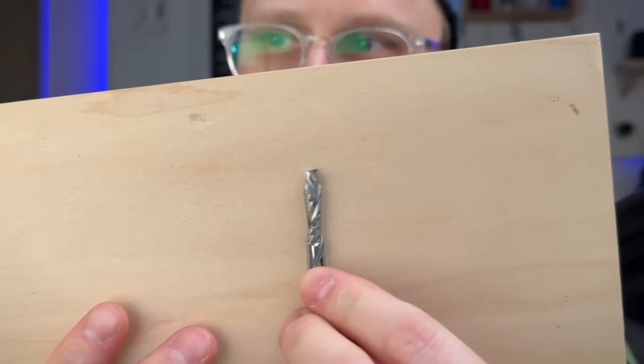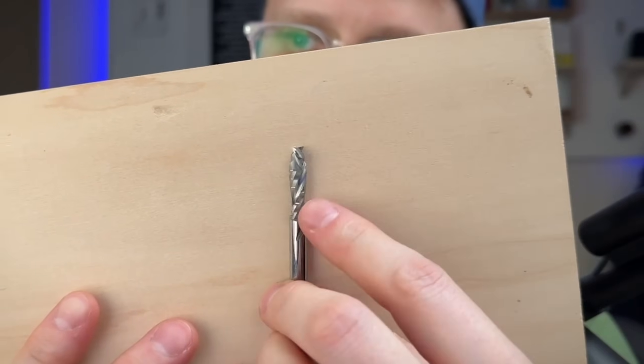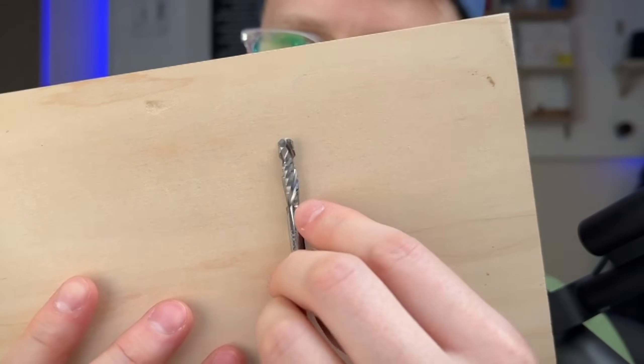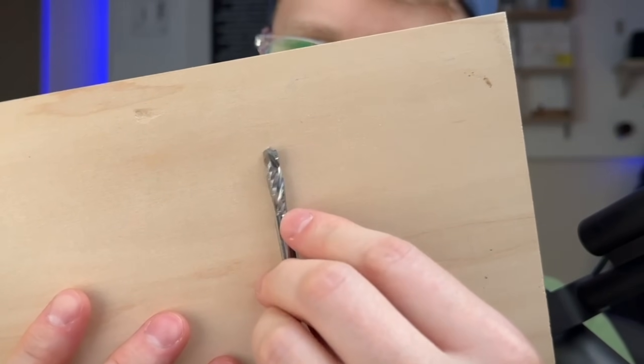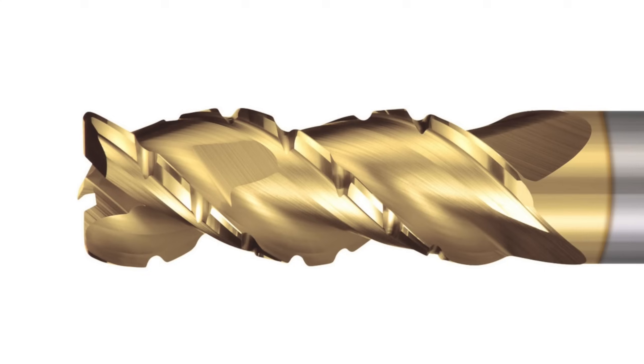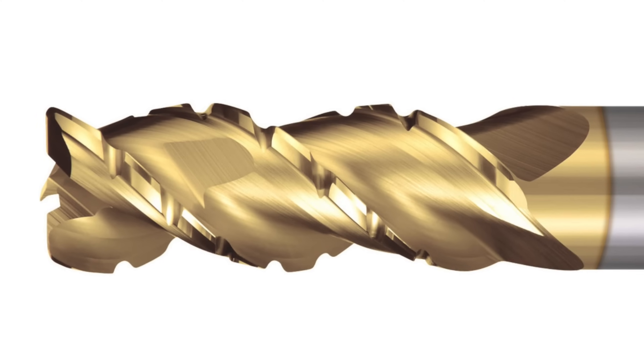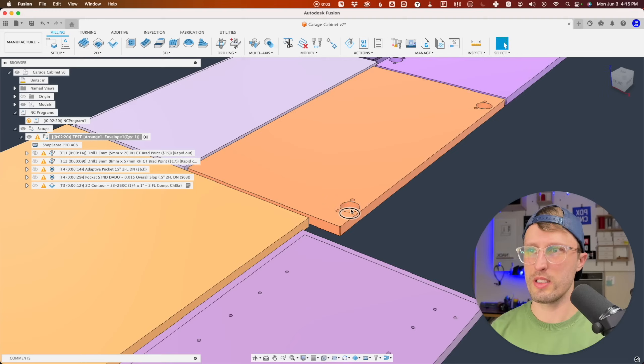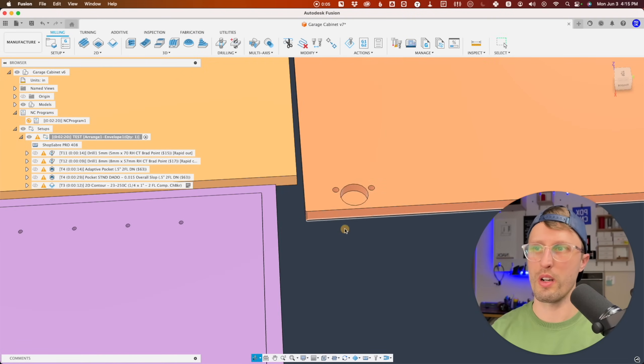One little last feature about this compression cutter. It's one of our chip breaker compression. Those little slices in the edge there actually break up the chip and reduce the torque needed to cut. Thus, it usually cuts better longer because it makes less heat.